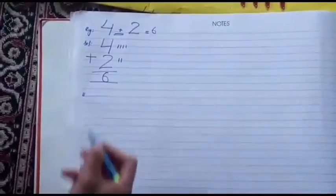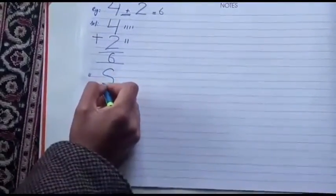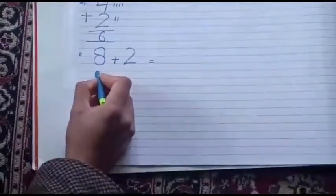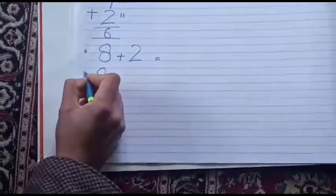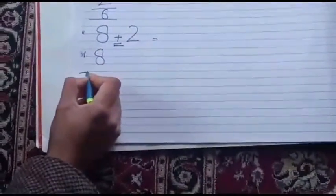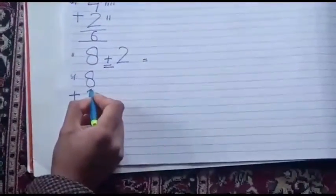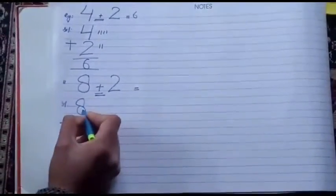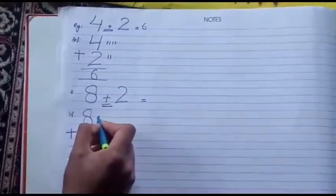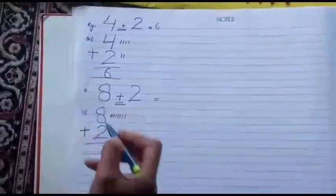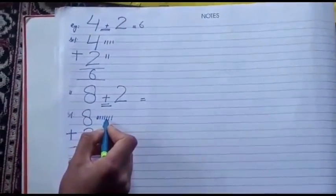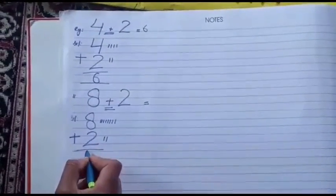इसी तरह दूसरी example है. अगर एक number है मेरे पास 8, दूसरा है 2. इन दो को जमा करना है. पहला number 8 लिखा, addition का symbol डाला, दूसरा number 2 लिखा. पहले number के लिए 8 lines: 1, 2, 3, 4, 5, 6, 7, 8. दूसरे number के लिए 2 lines: 1, 2. अब इन lines को जमा किया: 1, 2, 3, 4, 5, 6, 7, 8, 9, 10. That means 8 plus 2 is equal to 10.